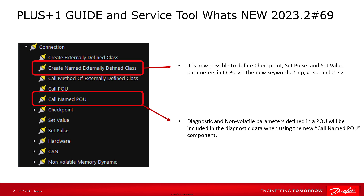Now, since this version, diagnostic and non-volatile parameters defined in a POU or CCP will be included in the diagnostic data directly. There are different ways to define those parameters. For both POU and CCP, a new call component is available which is mandatory to use diagnostic data from a POU or CCP — called named POU and create named externally defined class. Inside CCP, it is now possible to define checkpoint, set pulse, and set value parameters via the new keywords CP, SP, and SV.